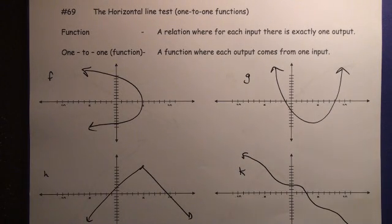Number 69, the horizontal line test to determine if functions are one-to-one.